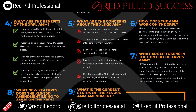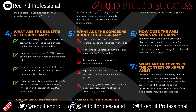What are the concerns about the XLS-30 AMM? The potential for increased market volatility, concerns about potential manipulation by attackers like front running, and fear of AMMs leading to centralization over the XRPL. The Ripple X team believes AMM won't harm consensus performance, but concerns from those voting on this persist, and a third party audited it, though security remains one of the top community concerns.